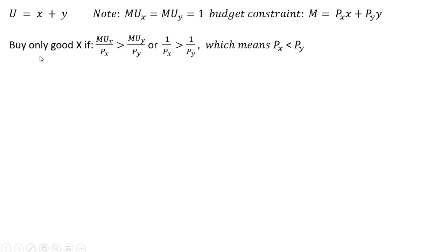We're going to only buy good x if the marginal utility per dollar of good x exceeds the marginal utility per dollar of good y — or, replacing our marginal utilities with their values, if this condition holds. That implies that the price of good x is less than the price of good y.